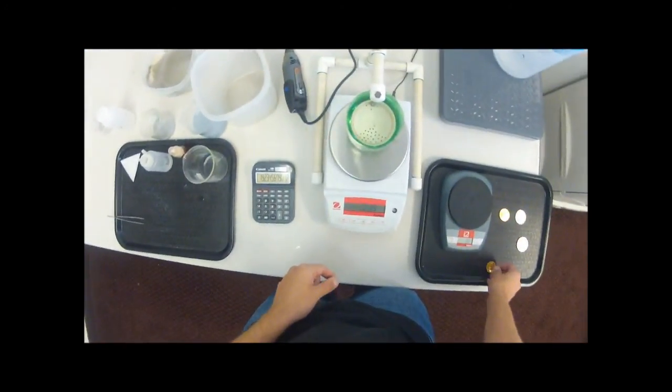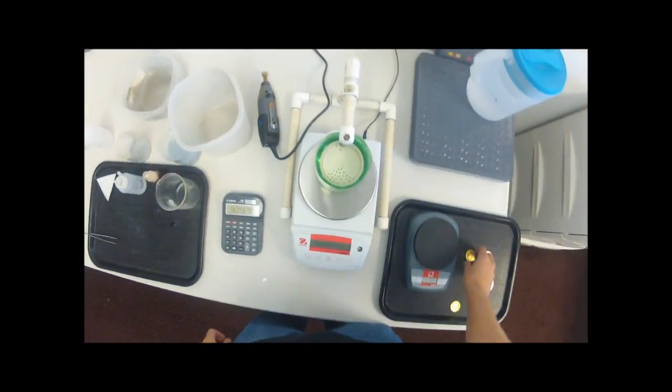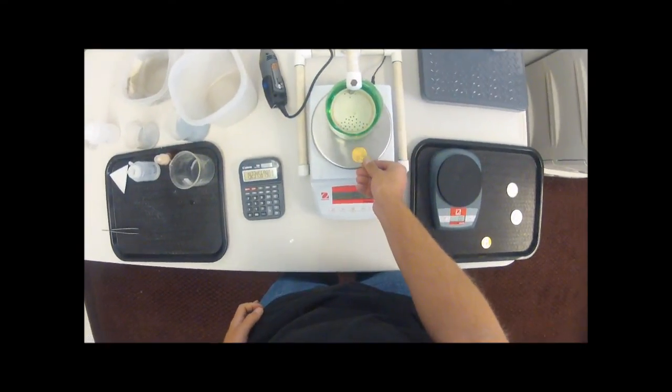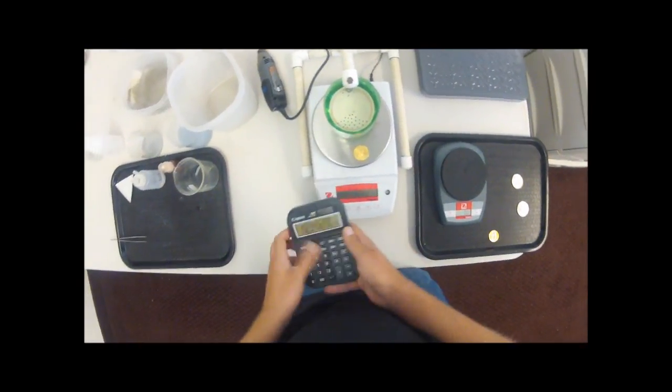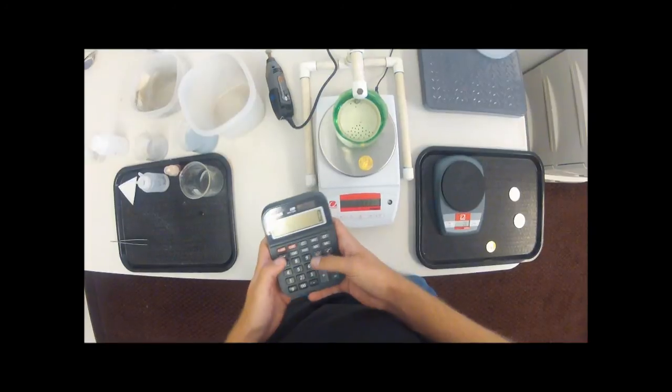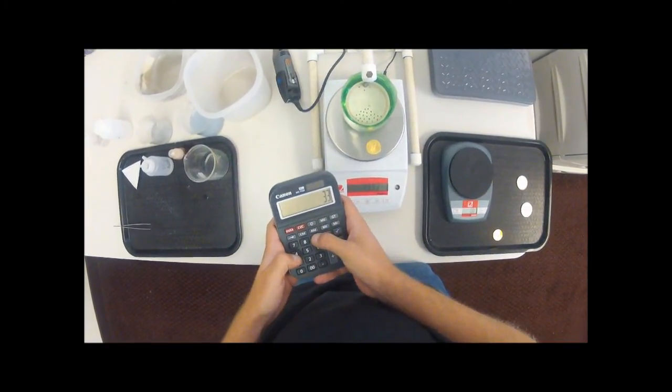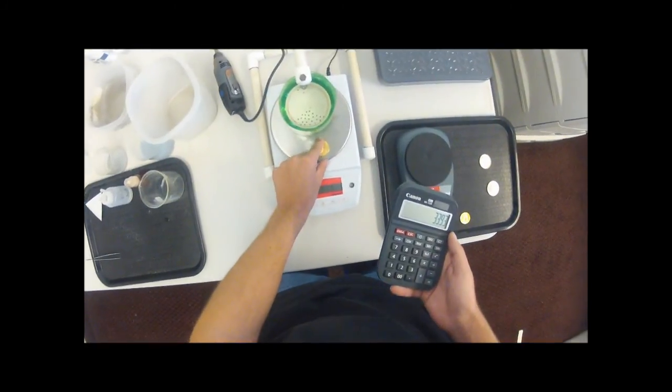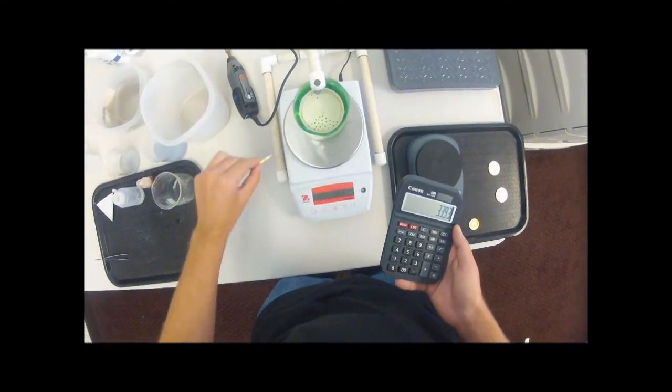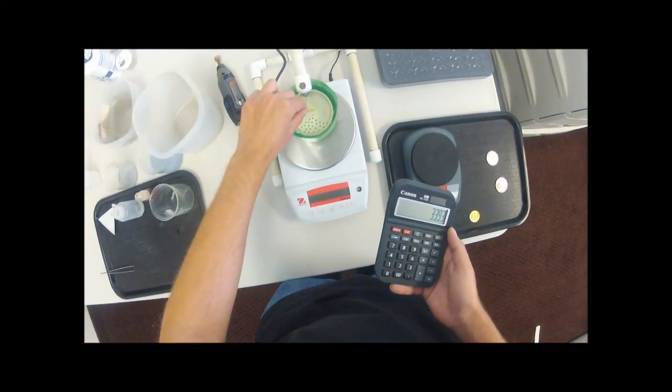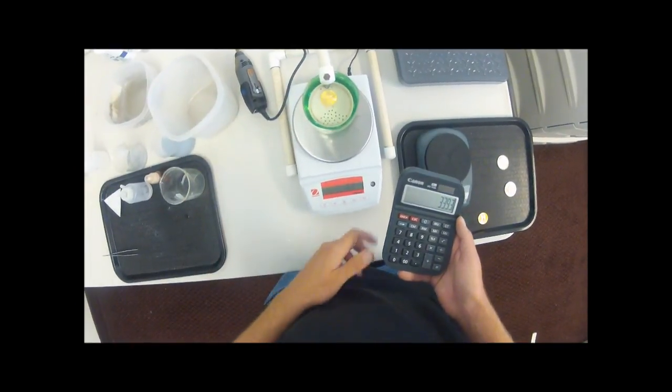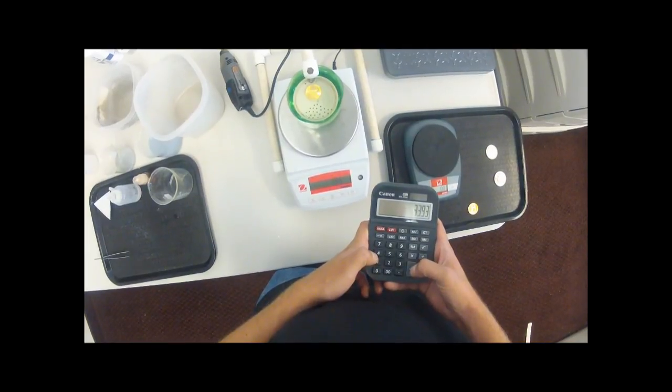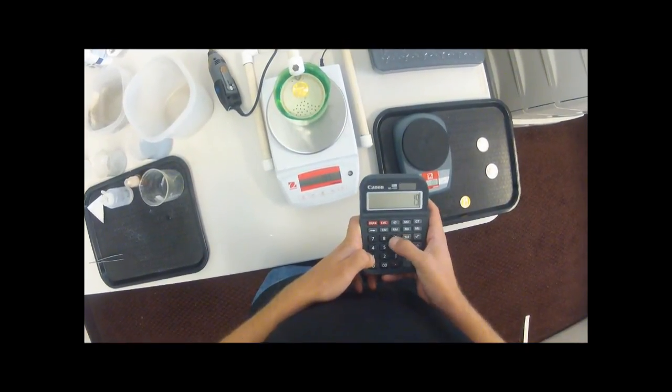So now we'll do the gold eagle. So as I mentioned before, the gold eagle is actually 90 percent gold, and it weighs 33.93 on this scale. And it displaces 1.96, or 1.95 grams of water.